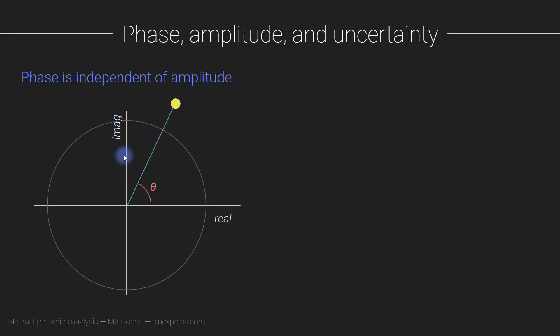Here you see a complex plane. Imagine that this is a Fourier coefficient for one particular frequency. It's a little bit abstracted, so it doesn't really matter which frequency this is. The first thing I want to convince you of is that phase is independent of amplitude. This is something I highlighted in the previous section where I talked about simulating sine waves, and you saw that we can have a sine wave with an amplitude parameter that is independent of the phase.